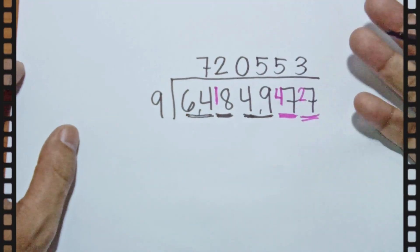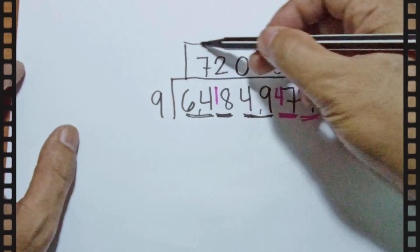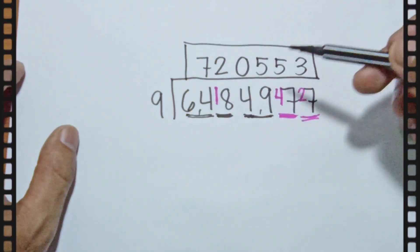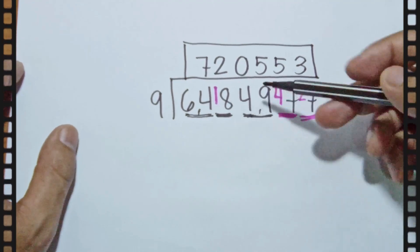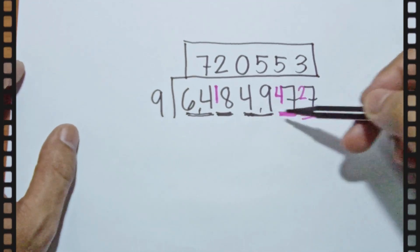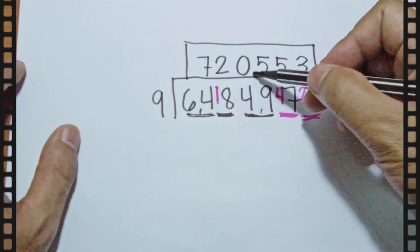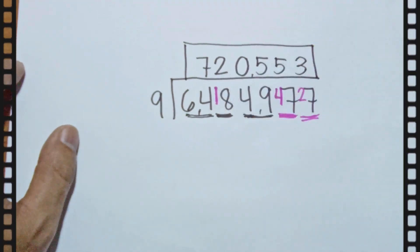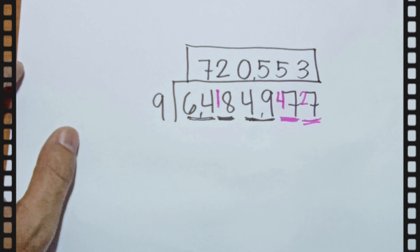So our answer when we divide 6,484,977 by 9 is 720,553.